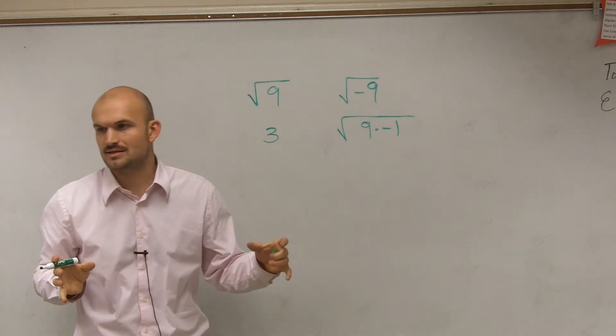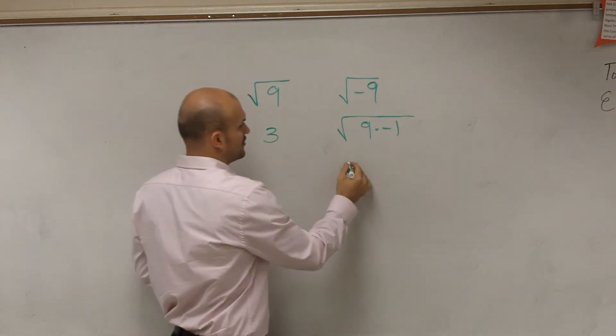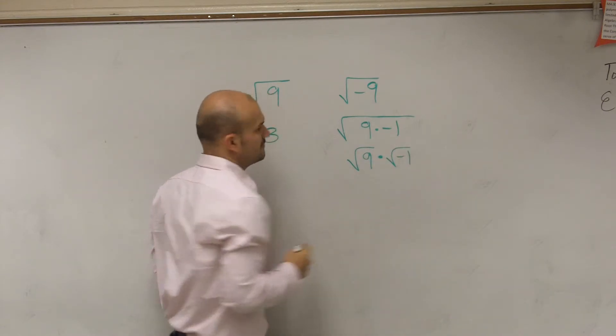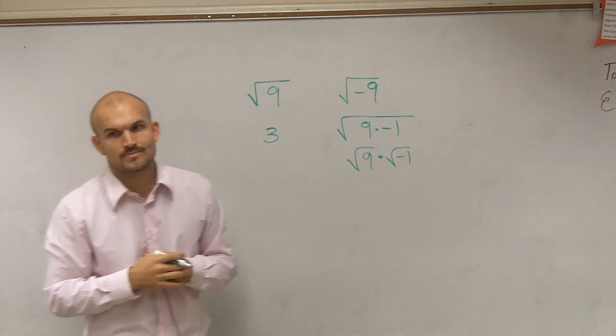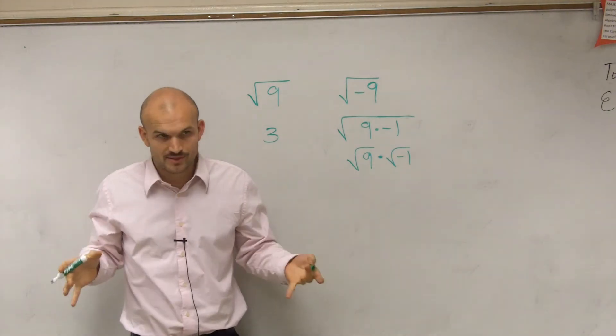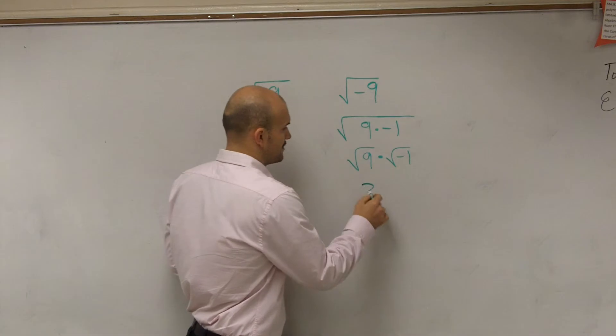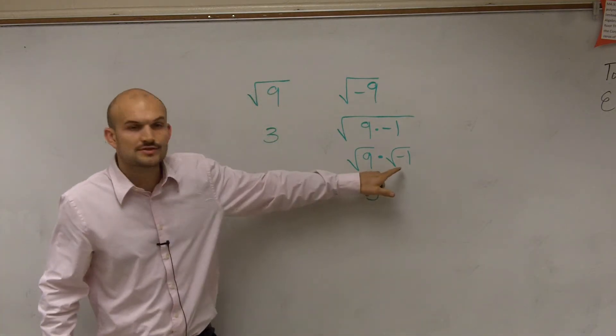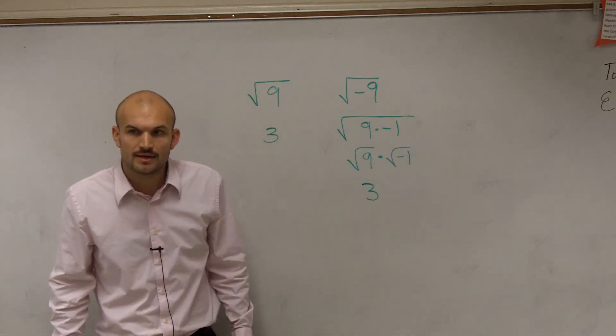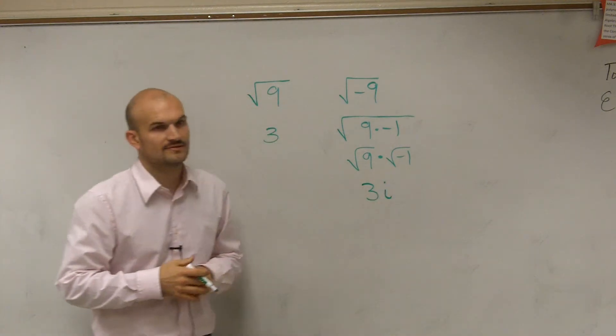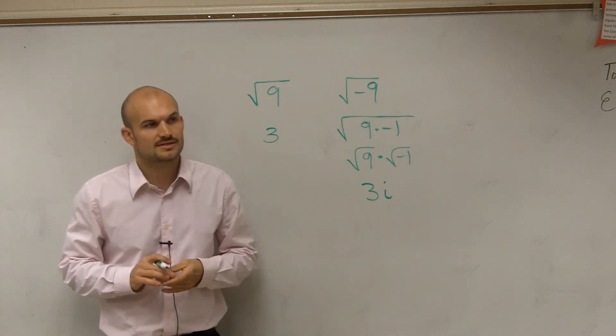Don't you guys remember when I split them up last class? You can break that up into the square root of 9 times the square root of negative 1. So by using our imaginary number system, we know the square root of 9 is 3, and the square root of negative 1 we write as i. So therefore, we can simplify it to 3i.